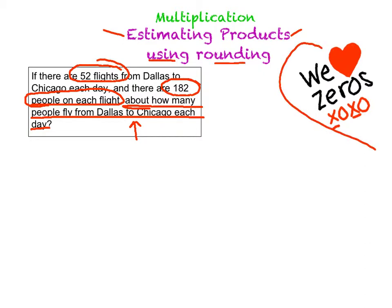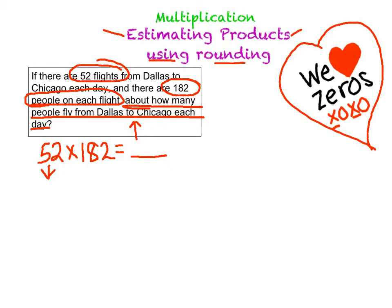So here we are — back at loving our zeros when we multiply. I'm going to rewrite the problem as a number sentence: 52 times 182 equals something. And I know that I need to round. I need to round to get as many zeros as possible, so that means I'm rounding to the nearest 10. Looking at the 2, that tells me 52 rounds to 50. Now trying to get the most zeros — I'm looking at the 1, and its neighbor the 8. The 8 tells me I need to bump up my 1 to a 2 and round 182 to 200.